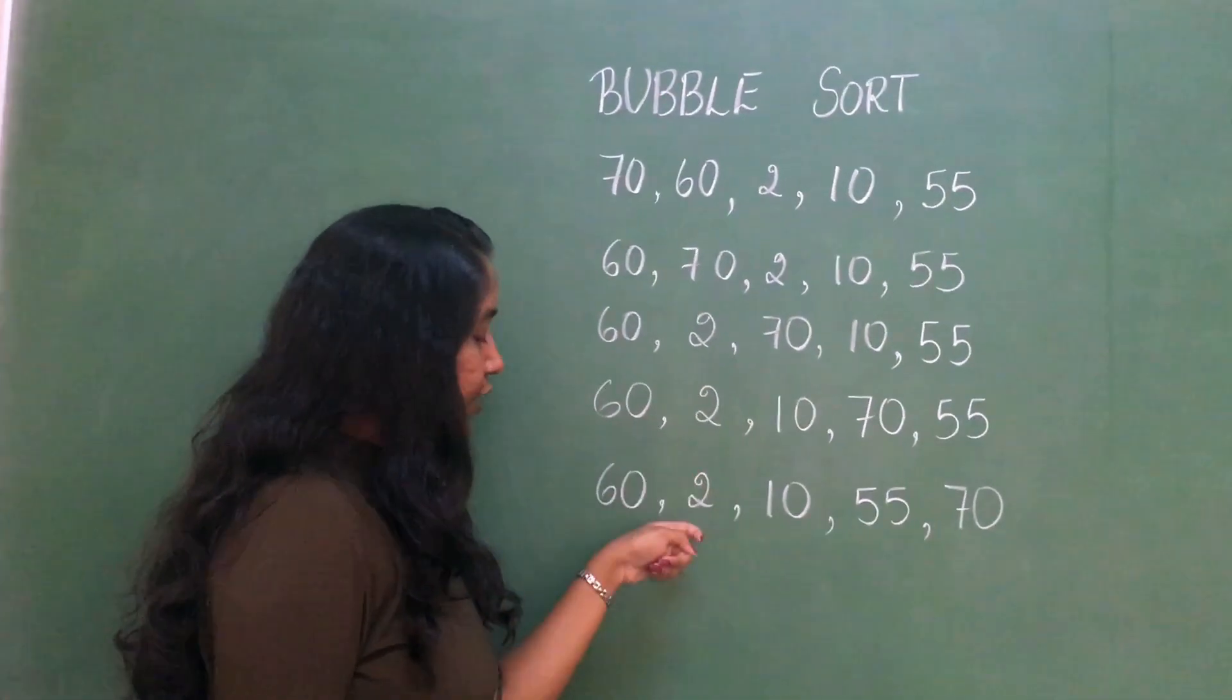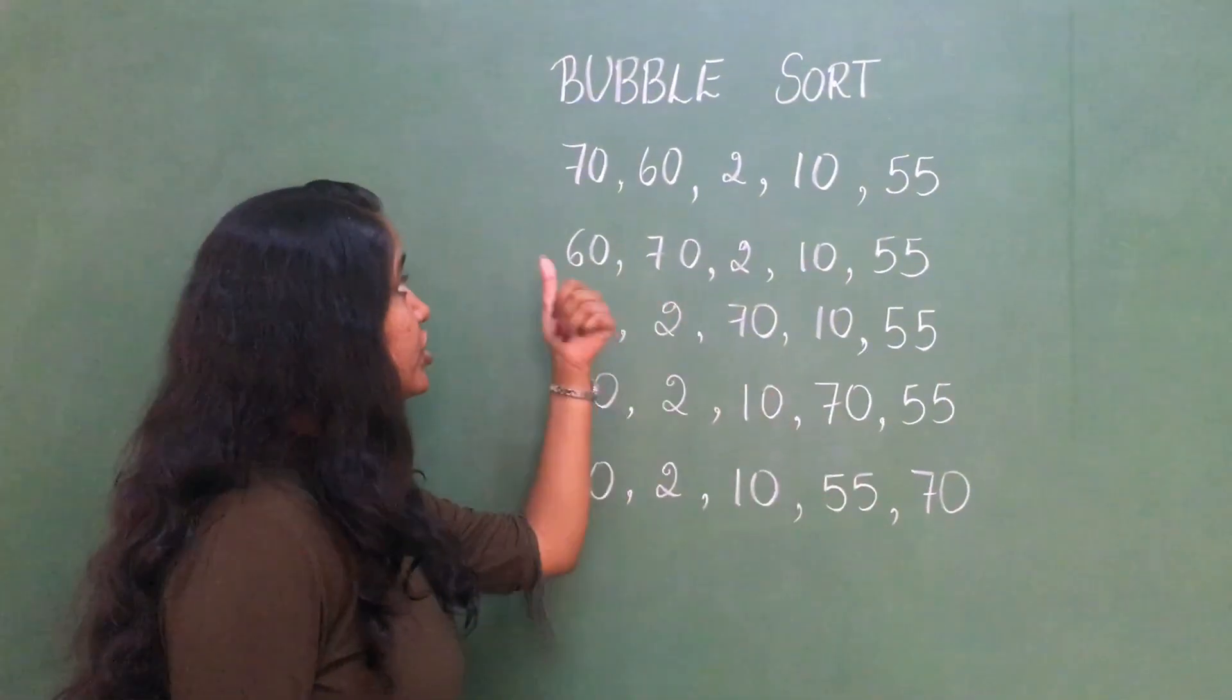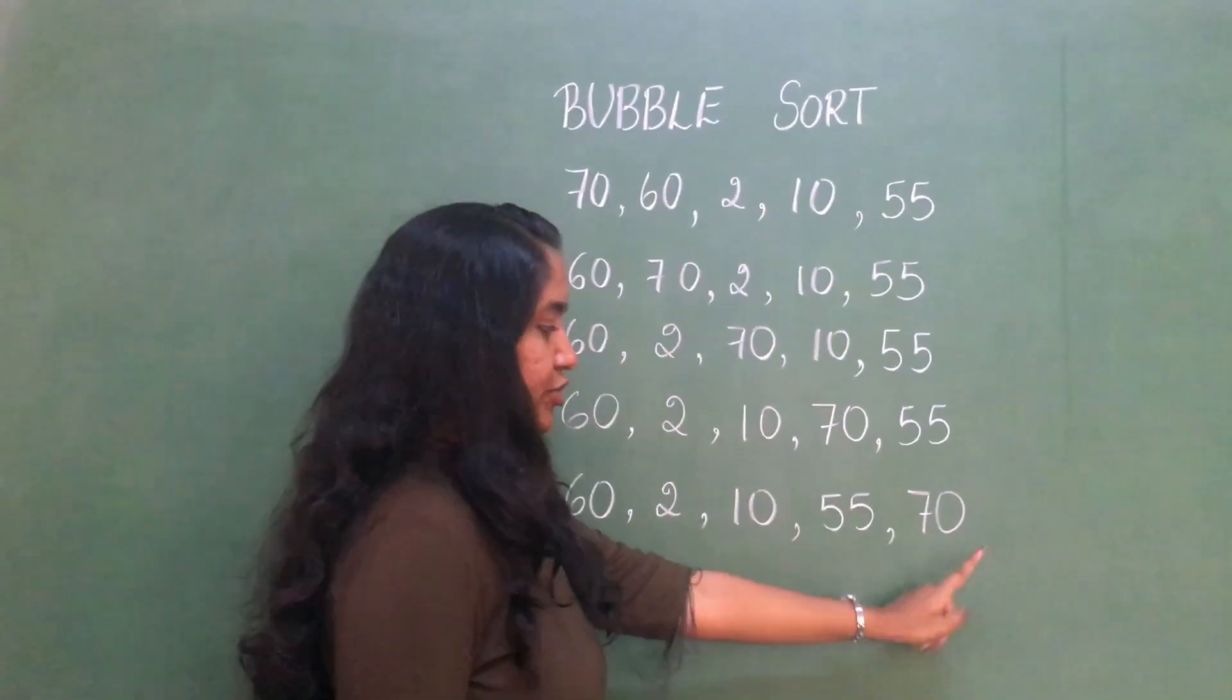At the end of the first pass, we see that 70, which is the largest number among these integers, is put in the last position.